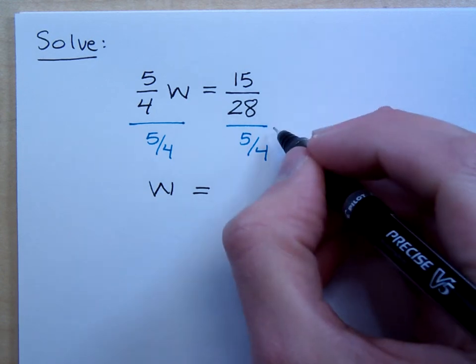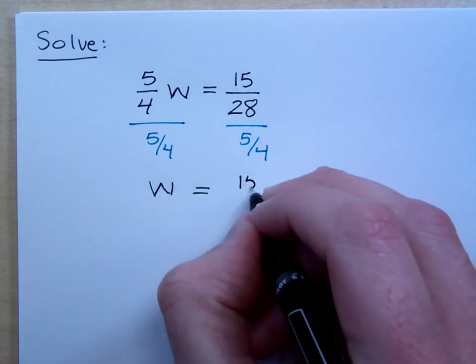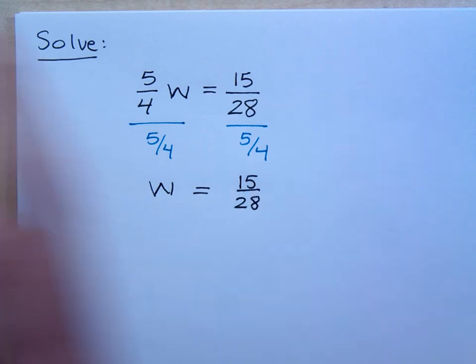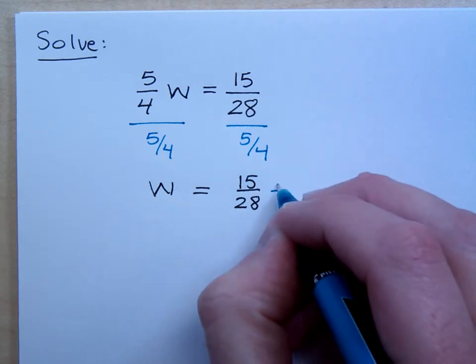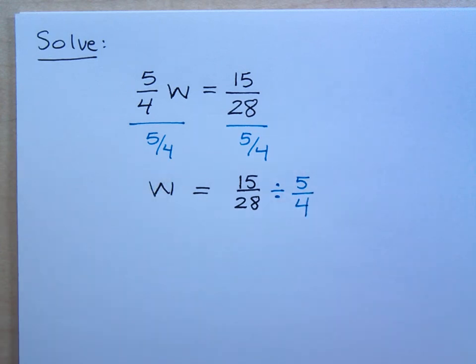But understand what this means. This is division, right? So it means what you're doing is that you're taking 15 28ths and you are dividing it by 5 over 4, like that. That's another way to write that. Don't you all agree?